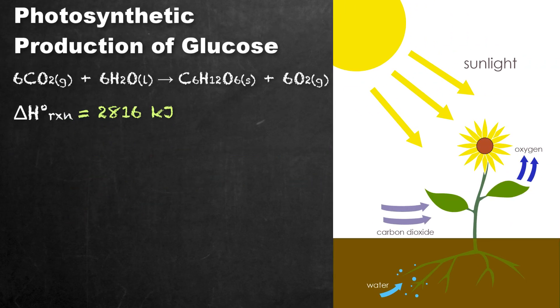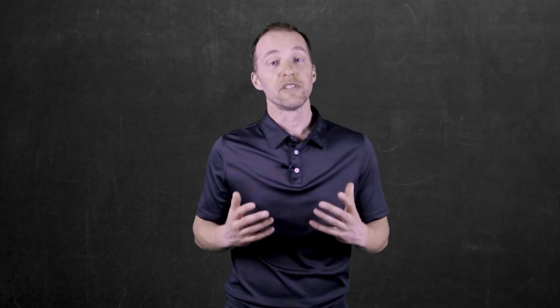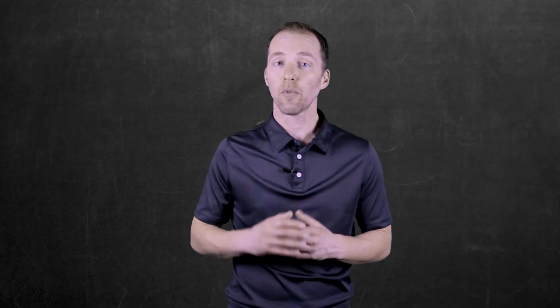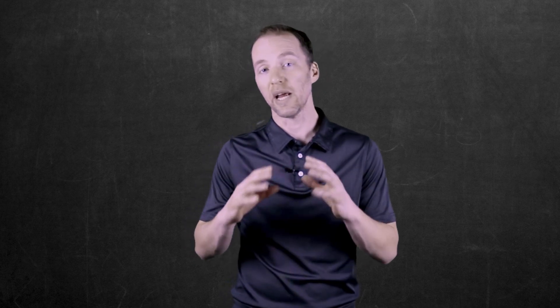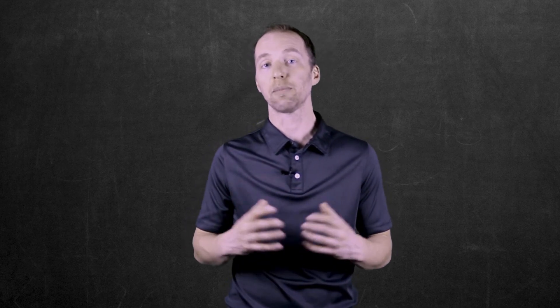It should not be a surprise that photosynthesis is an endothermic process — we have a positive delta H. Remember, energy must be input into photosynthesis in the form of sunlight for this reaction to proceed. As you can see, this method is a little more condensed than using Hess's Law by algebraically rearranging equations, but it is just as acceptable.